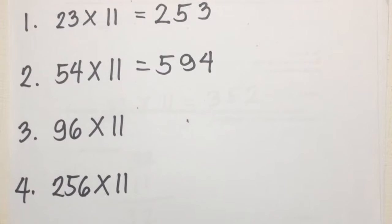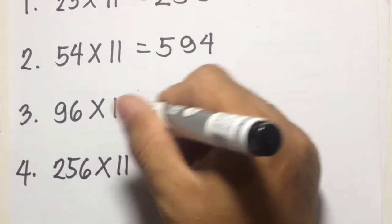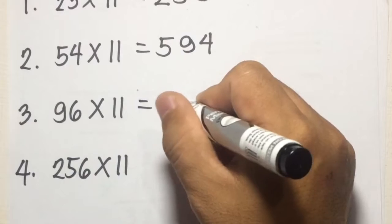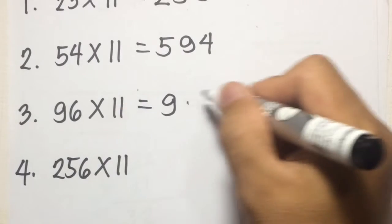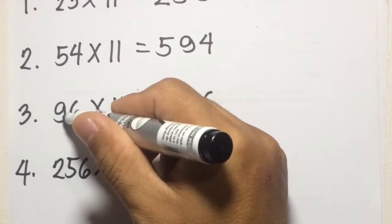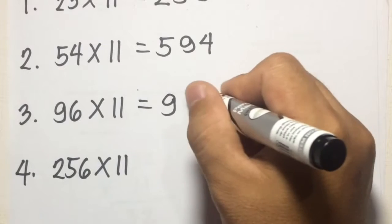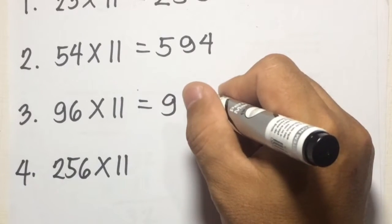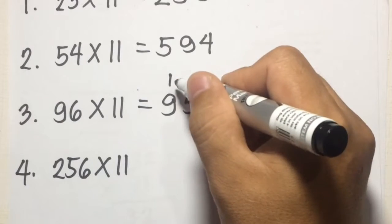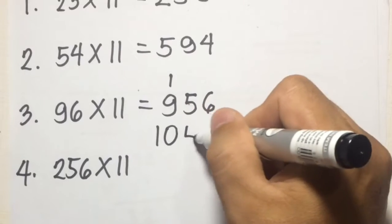Number 3: 96 times 11. The first digit is 9 and the last digit is 6. The middle digit is 9 plus 6, which is 15. Since this is 2 digits, we put 5 in the middle and carry 1 to the first digit. So 1 plus 9 is 10, giving us an answer of 1056.